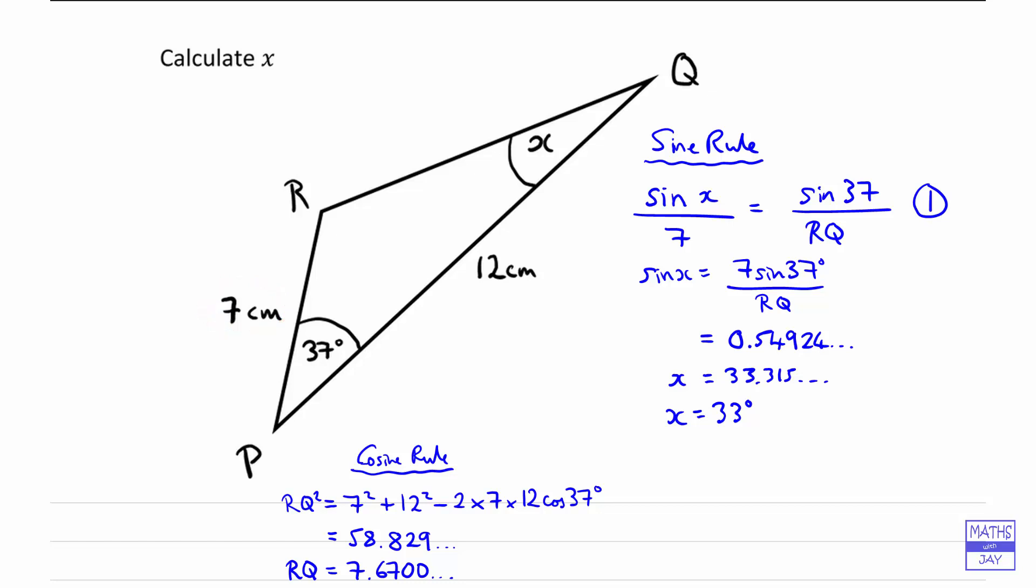so x can't possibly be a huge angle, because if we did 180 minus 33 we'd have an enormous angle, and that would be impossible for us if there's opposite a side that's not a big side, not the biggest side. So x is 33 degrees, so 33 degrees to the nearest degree.